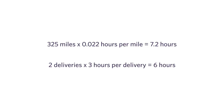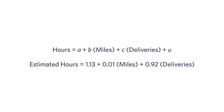I end up double counting the effect of miles and deliveries because miles and deliveries are themselves interrelated. And this is the beauty of multiple regression. When you see these effects — the 0.01 marginal effect of miles on hours and the 0.92 marginal effect of deliveries on hours — these are the effects after filtering out the interrelated variable. So we use this term, marginal effect, to describe this phenomenon.